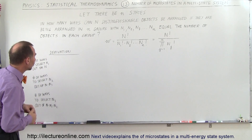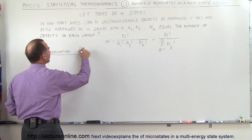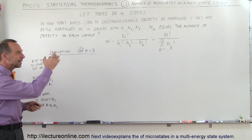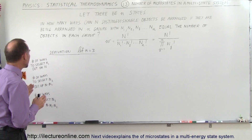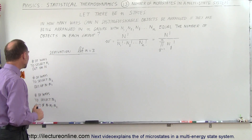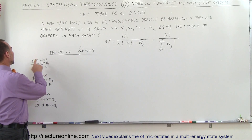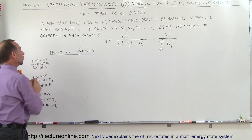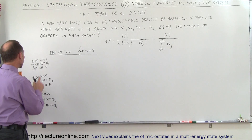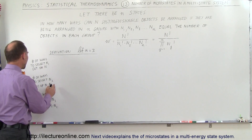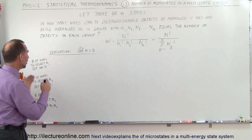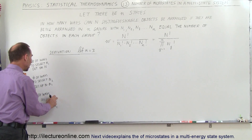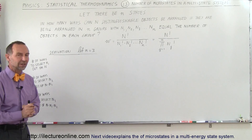Let's do an example — a derivation. Let n equal three different states. Of course, we can do this for any number of states. What we have to do is calculate the number of microstates in each case. First, we find the number of ways to select n sub 1 objects — all the objects in state 1 — out of the total number of objects. Then we find the number of ways to select all the objects in state 2 out of the remaining objects, since we can no longer include the ones already chosen for state 1. Finally, we find the number of ways to select all the objects in state 3 out of whatever remains.